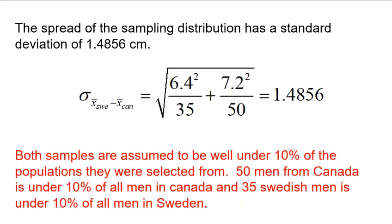I cannot use this formula until I am sure that my samples are independent of each other. That means that both samples, the 35 men from Canada, 35 has to be under 10% of all Canadian men, which I'm pretty sure it is. There's millions of Canadian men. And 35 Swedish men needs to be under 10% of all men in Sweden, which again, a million in Sweden, so I'm pretty sure that that's going to be true.